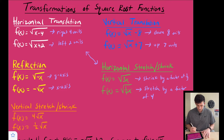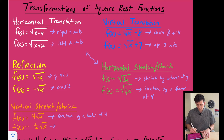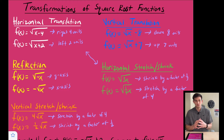The last transformation is vertical stretch and vertical shrink. This one is what it looks like — here we would have a vertical stretch, and this one would be a vertical shrink by a factor of one half. Those are our transformations and what they look like in the equation.